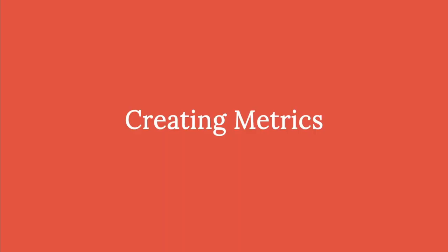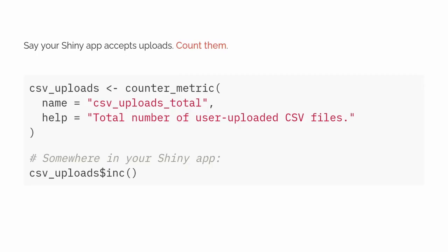The OpenMetrics package allows you to create custom metrics for your R code. To give a concrete example, suppose you have a Shiny application that accepts user-uploaded CSVs. This could be a very important measure of load on your application, because if users are uploading lots of CSVs it may impact the service for others, so you'd want to count it. The counter_metric function requires only a name and a little bit of human-readable help text.